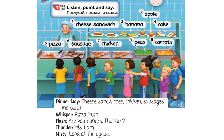Pizza? Yum. Are you hungry, Thunder? Yes, I am. Look at the queue. Now say the words: one – cheese sandwich, two – banana, three – apple, four – cake, five – pizza.